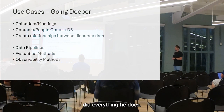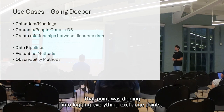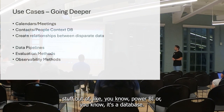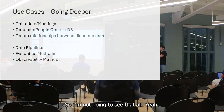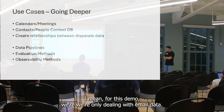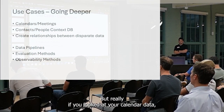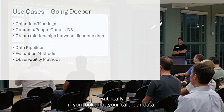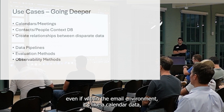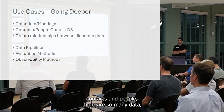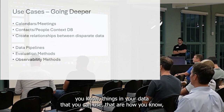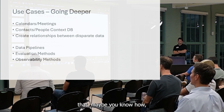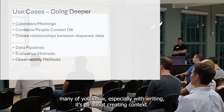He was digging into loading everything from Exchange, pulling stuff out of — I guess it's a database. For this demo we're only dealing with email data, but really, if you looked at your calendar data, contacts and people, there are so many valuable data sources. Especially with RAG, it's all about creating context. The more context you can create, the better your results are going to be. I heard of Chat RTX, bought a GPU, started slamming data in there, and I was like, man, this doesn't work at all. That's what got me thinking a little differently about it.